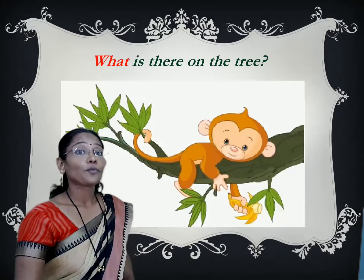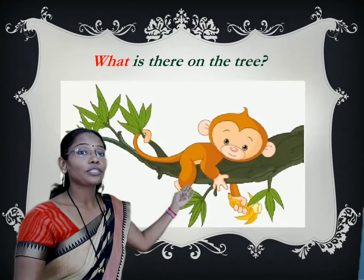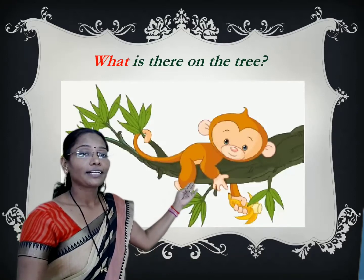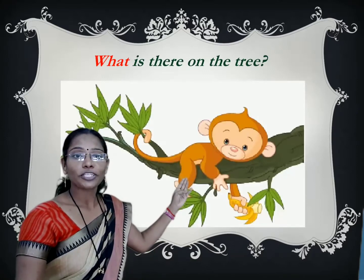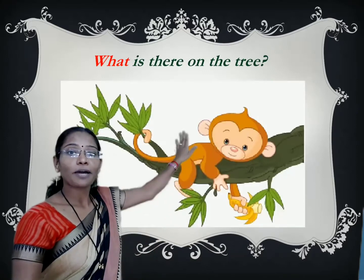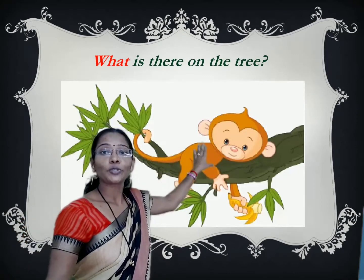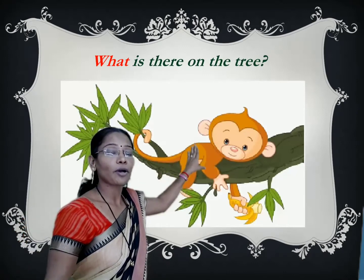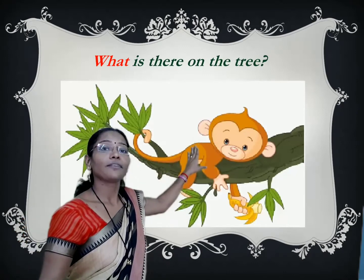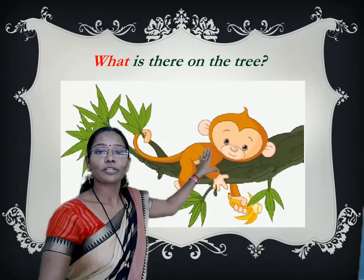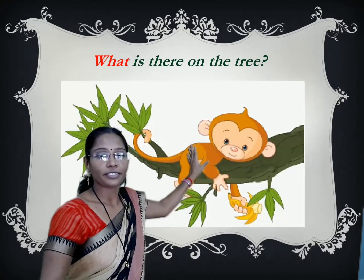Next, 'what is there on the tree?' This question we want to ask about the monkey. It's an animal. So to ask a question about an animal, we can use the question word 'what'.